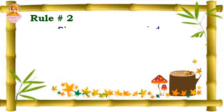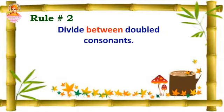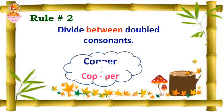Rule number two: divide between double consonants. Example: copper — C-O-P-P-E-R. Here the letters PP are double consonants. So we are going to split between those double consonants as cop-per.